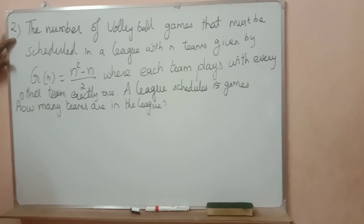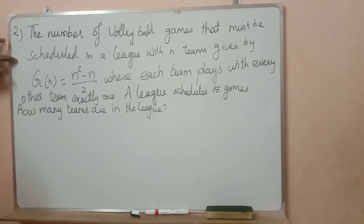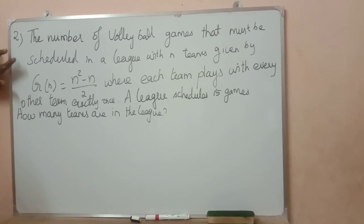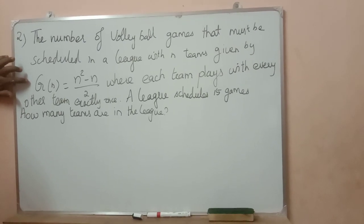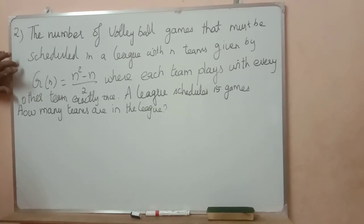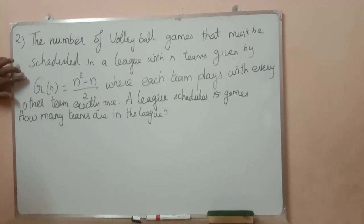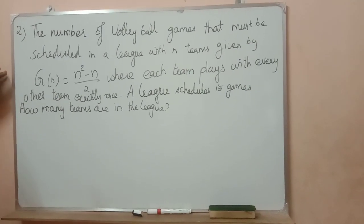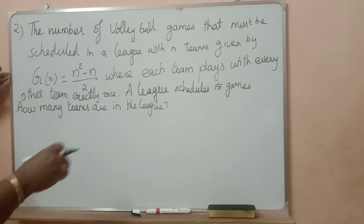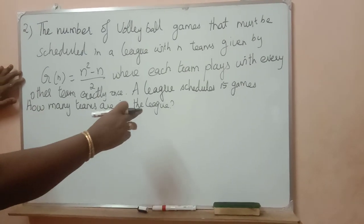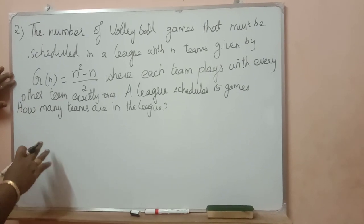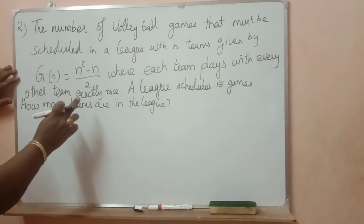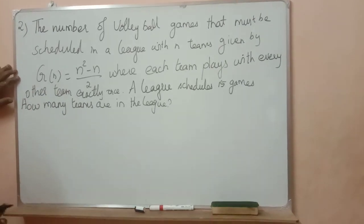Question number 2: The number of volleyball games that must be scheduled in a league with n teams. Totally n teams are there, they are playing volleyball. It is given as: number of games g of n equal to n square minus n by 2, where each team plays with every other team exactly once. Each team is playing with the remaining teams — for example, suppose 10 teams are there, each team will play with the remaining 9 teams. A league schedules 15 games — how many teams are in the league?